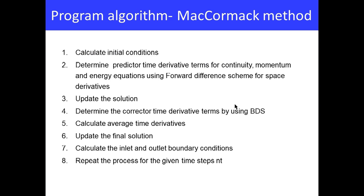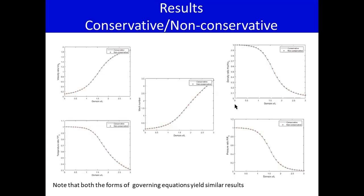The algorithm for McCormack's method consists of: calculating the initial conditions, computing the predicted time derivative, upgrading the solution, computing the corrected time derivative, averaging the two time derivatives found, and finally upgrading the solution. This is repeated for N iterations. The full details can be found in the reference MATLAB program.